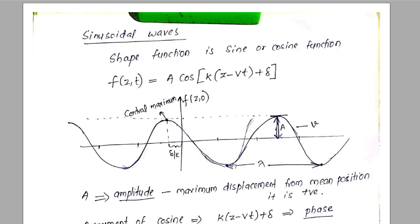In the last class we talked about waves. We said a wave can be represented as a wave function f of z, t equal to g of z minus vt. The space and time coordinate appear in a special combination — that is, z minus vt is a special combination. This function is called the shape function.